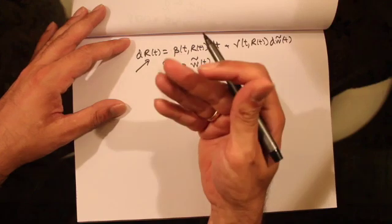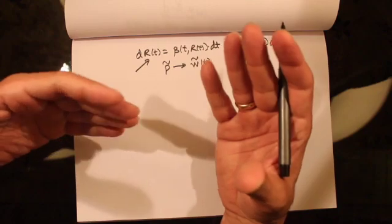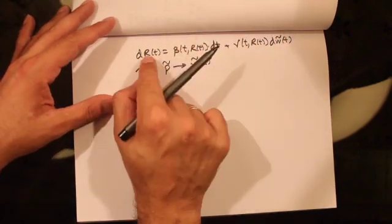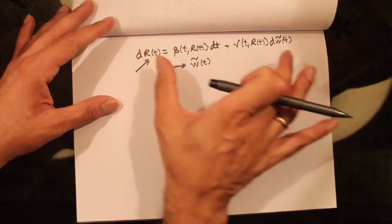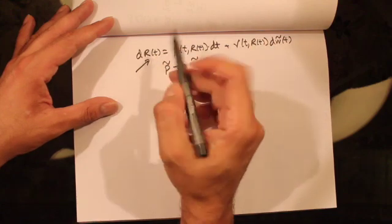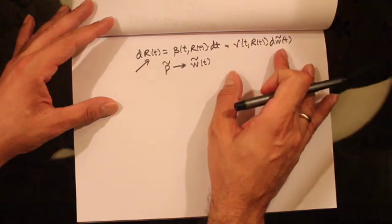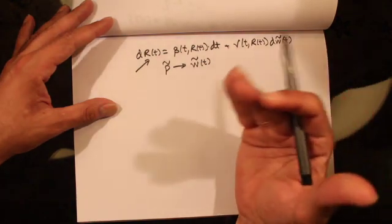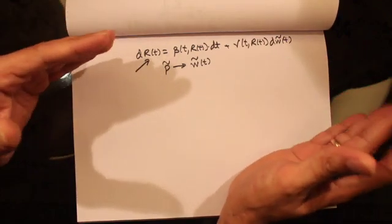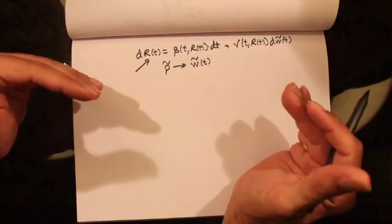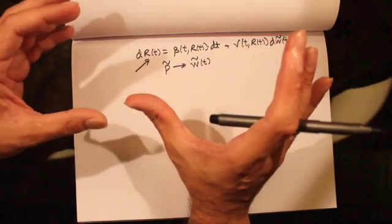r(t) is called a short rate because we could borrow or lend for a very short period of time at this interest rate. This is a single factor model — if the dynamics of the interest rate process are given by a single differential equation, it's called a single factor model. The limitation is that we can only model parallel shifts in the yield curve and cannot model complex changes like twists.